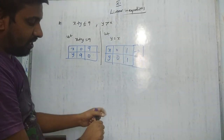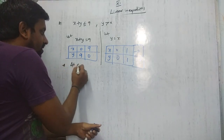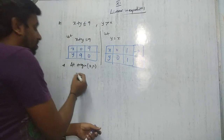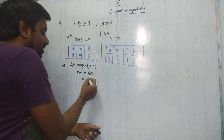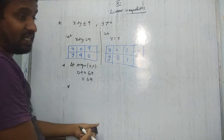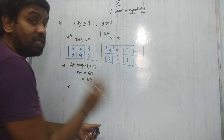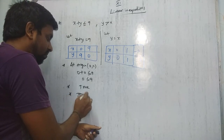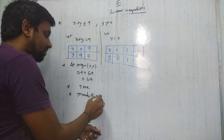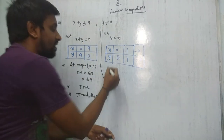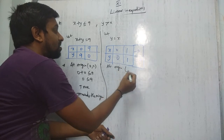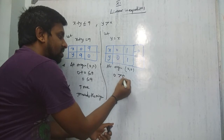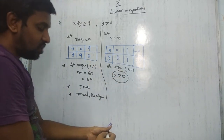Step 2: Check at origin (0, 0). For x + y ≤ 9: 0 + 0 = 0 ≤ 9 — true. So shade towards the origin. For y > x: substituting (0, 0) gives 0 > 0. This is neither clearly true nor false.